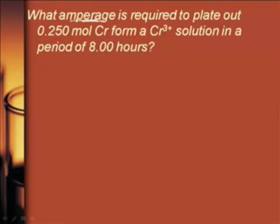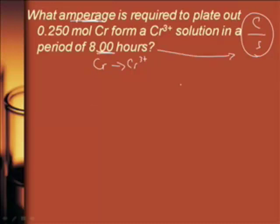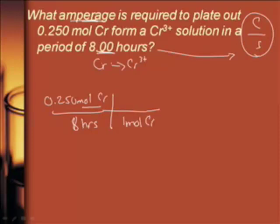Now this one's asking for the actual amperage, so amps are coulombs per second, so we're solving for coulombs per second. So it's the same deal. So Cr going to Cr3+. Now this has eight hours, but that's already the time in the bottom. Let's just start with 0.250 moles of chromium and put that over eight hours. So we've got moles per time unit. So let's convert our moles of chromium into coulombs. I can say one mole of chromium - actually I forgot my three electrons. Three moles of electrons. Oftentimes guys the way we do it there might be other ways, this is just how we do it.